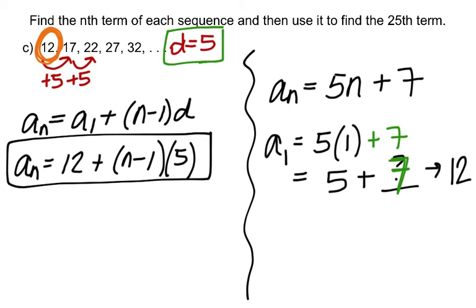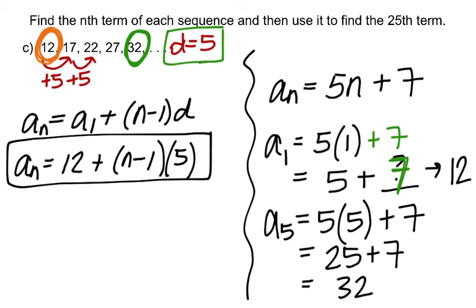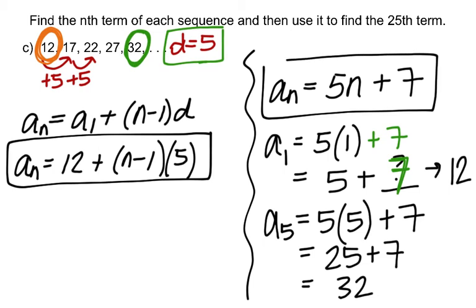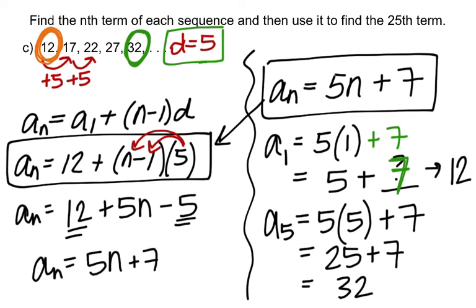So the formula is a sub n equals 5n plus 7. To verify, let's test the last given term, 32, which is the 5th term. Substituting n equals 5: 5 times 5 plus 7 is 25 plus 7, which is indeed 32. Our formula is confirmed. If we go back and distribute the formula from the left side, we get 12 plus 5n minus 5, and 12 minus 5 is 7 — the same formula.